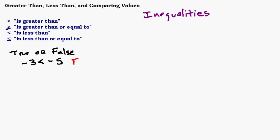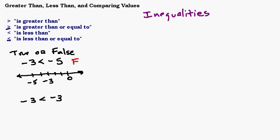Negatives can be tricky. If you think about a number line where zero is here, then negative 1, negative 2, negative 3, negative 4, negative 5 — whatever number is further to the left is smaller. So negative 5 is actually smaller than negative 3; negative 3 is not smaller than negative 5. Now if I said: is negative 3 less than or equal to negative 3? Since that 'equal to' part is in there, that would definitely be true. That's the main difference when you have that equal to part.